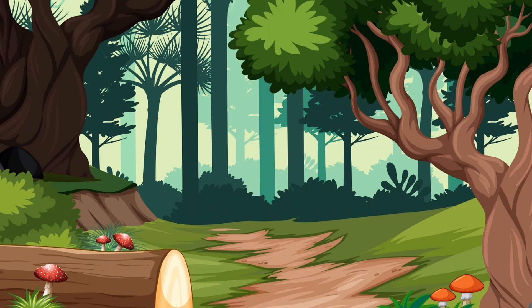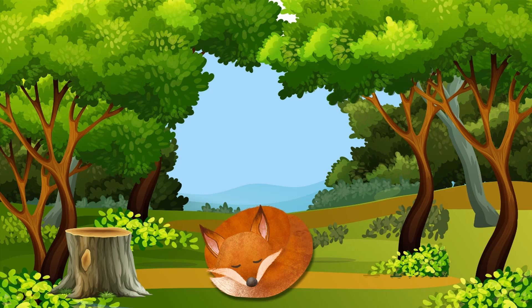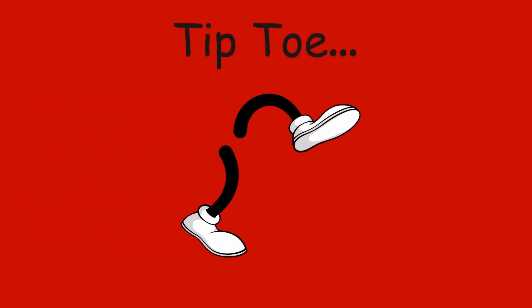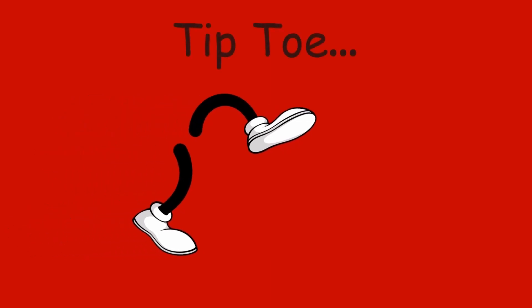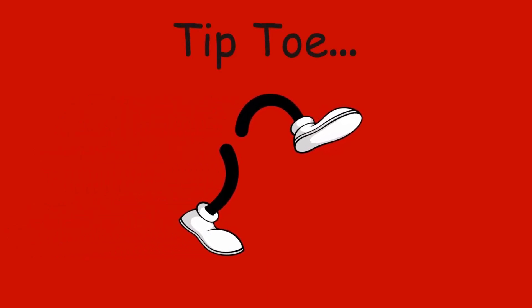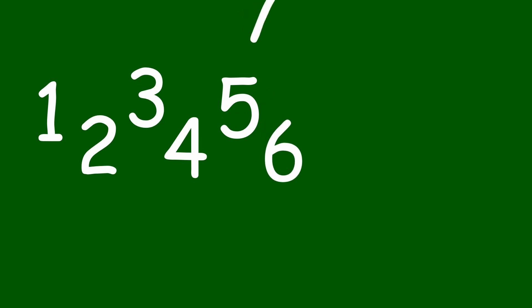We're going on a nature walk, you and me. We're going on a nature walk. What animals will we see? Oh, look. There's a fox. Shh. Tiptoe quietly. Let's not wake him up. Tiptoe. Let's count. One, two, three, four, five, six, seven, eight, nine, ten.